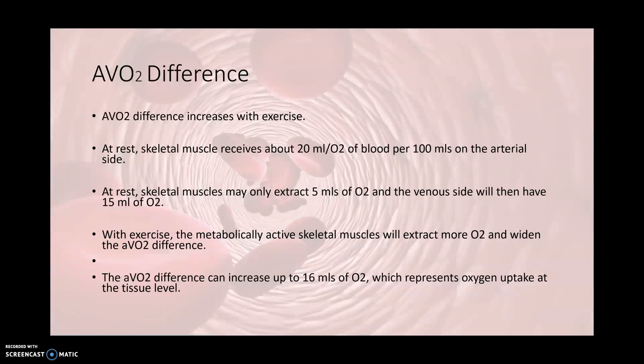For example, if we have the same 20 mLs coming into the tissues on the arterial side, then we measure on the venous side and only have 4 mLs of oxygen returning back to the heart, that means the tissues extracted about 16 mLs of oxygen. So it represents what's dropped off at the tissue level.